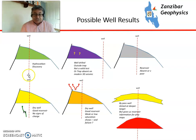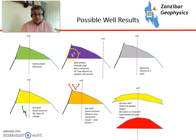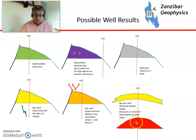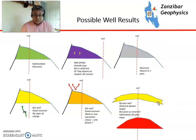We can also look at possible well results: a hydrocarbon discovery; a dry well with good reservoir but no sign of charge; a dry well with good reservoir but evidence of seal failure or low saturation; a well drilled outside your trap; a well where reservoir is absent; or a bypass well, where a well was aimed at a deeper target, went through the play, but wasn't aimed at drilling a valid trap — for example, in the North Sea, going through the Paleocene which is a major reservoir, while aiming at the Jurassic Fulmar, where you would not have a trap in the Paleocene system but would gain valuable data on reservoir distribution.